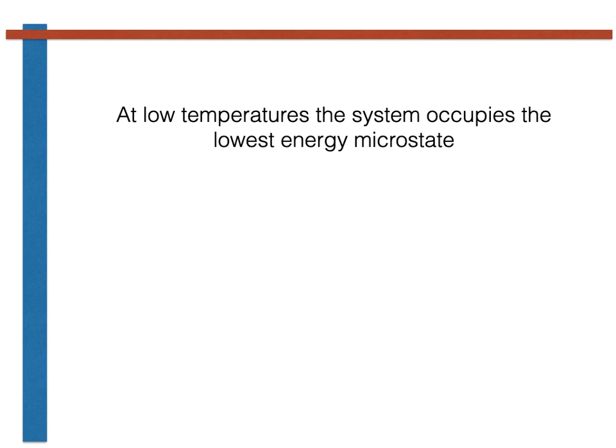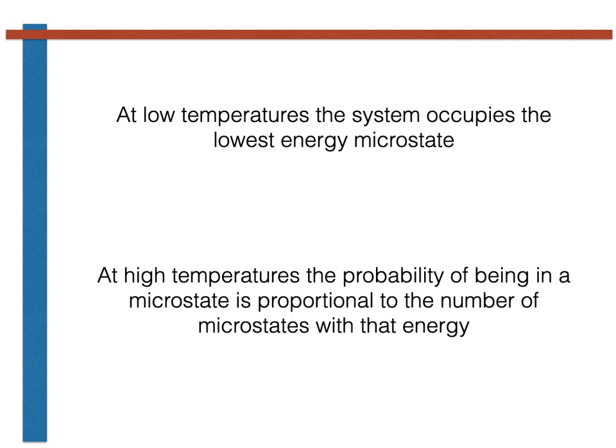To summarize, then, what we have seen is that at low temperature, the system will occupy the lowest energy microstate. At high temperatures, however, the probability of having a particular energy is proportional to the number of microstates with that energy. If we thus know the density of states, we can predict how the average energy will change with temperature and thus understand the behavior of our physical system.